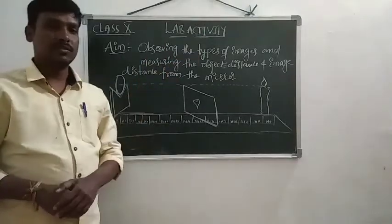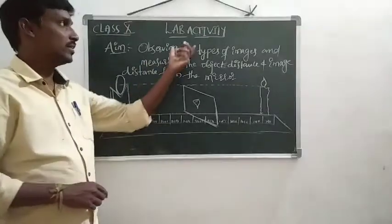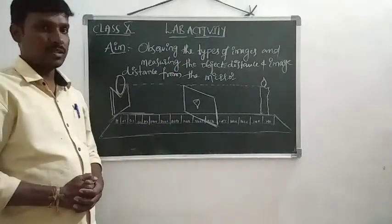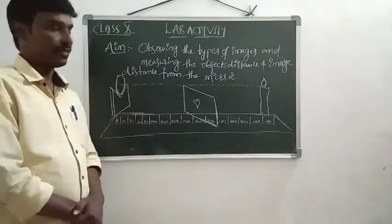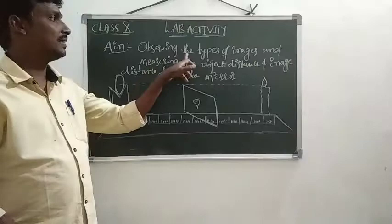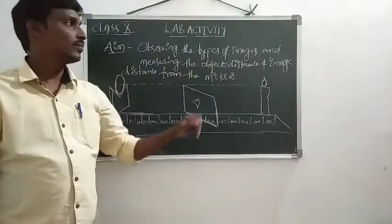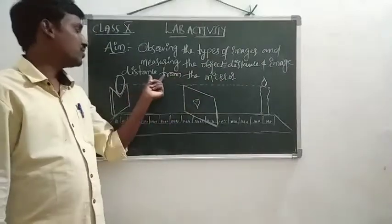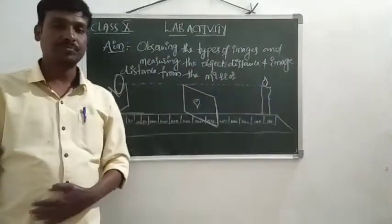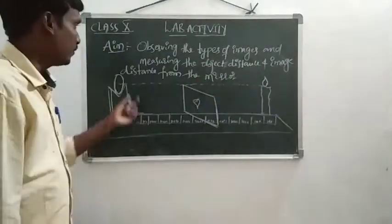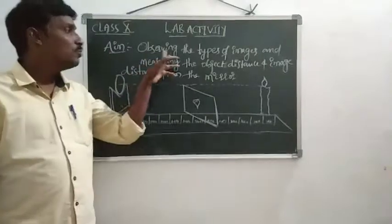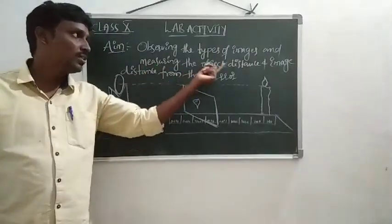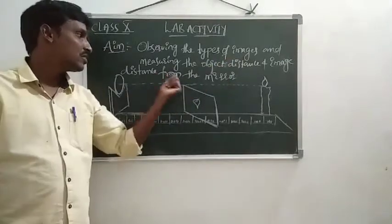Here we are going to discuss the lab activity. The aim of the activity is observing the types of images and measuring the object distance and image distance from the mirror.